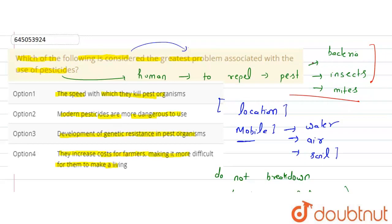First, the speed, there is no major problem with speed. Modern pesticides will be more dangerous. Development of genetic resistance in pest organisms. The biggest problem in given options is that the pest organism is genetically resistant. So this pesticide does not work.